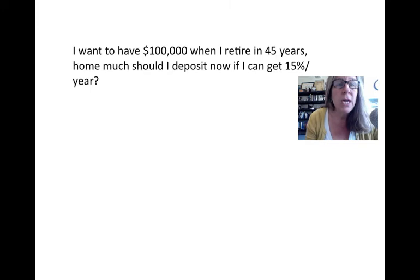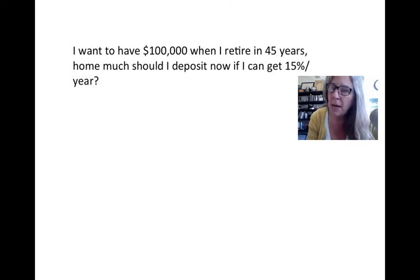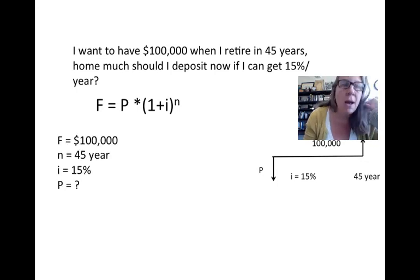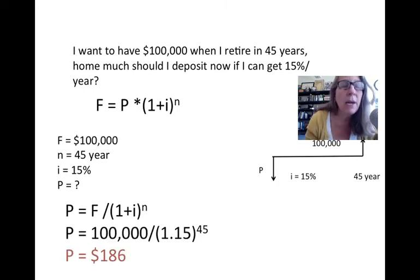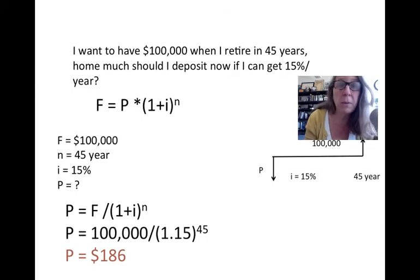The next problem: I want to have $100,000 when I retire in 45 years, and I estimate 15 percent per year return. We're finding P with a future value of $100,000 in 45 years. Using F = P(1+i)^n, we have F, i, and n, and we solve for P. The result is $186. If you put $186 in the bank right now, leave it for 45 years at 15 percent, you'll get $100,000. That seems unbelievable, but 15 percent is a high return.